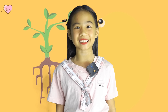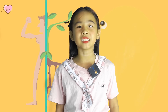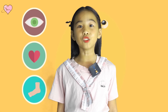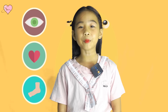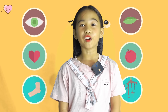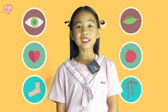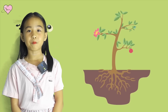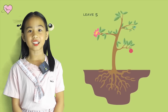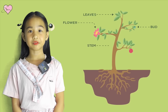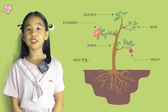Today, let's talk about plants. Plants are very similar to humans, and just like humans have different body parts doing different things, plants too have different parts for different functions. Let me tell you what the important parts of a plant are: leaves, bud, flower, stem, fruit, and roots.